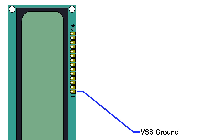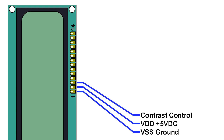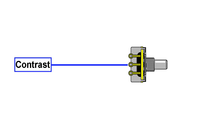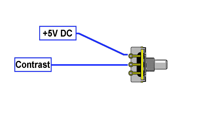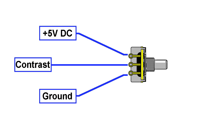The first pin is ground. The next pin is plus 5 volts. So these two wires are essentially what give the screen power. The next pin receives an analog voltage to set the contrast of the screen. Typically this is done by connecting it to the middle pin of a potentiometer, then the other two leads on the potentiometer go to plus 5 volts and ground. So the signal you're feeding it will always be somewhere in between those numbers depending upon where you turn the knob.